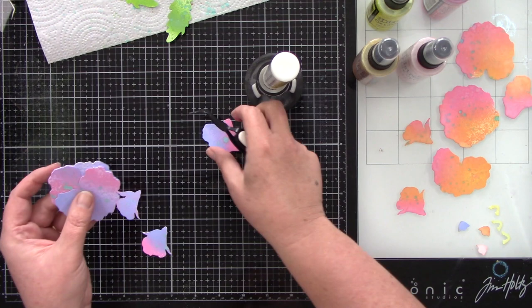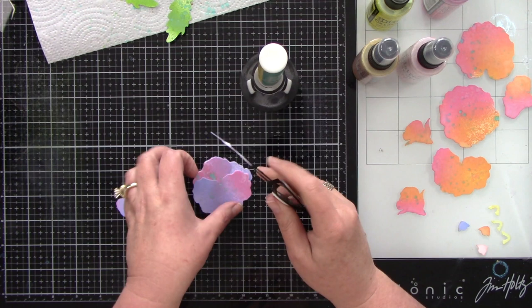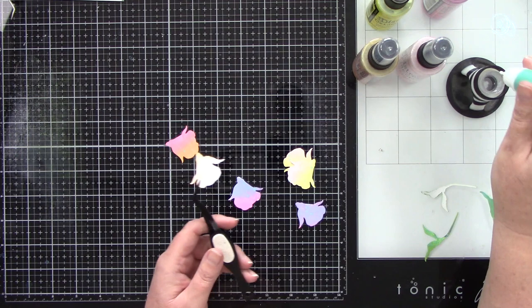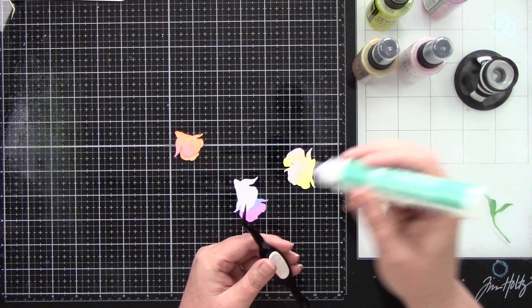I'm just using liquid glue right in the center because I want to be able to pop up the petals a little bit and give them a little bit of a fuller look so they're not laying flat. So I'm only adding glue to the center pieces of the flowers. But look at how easy that is coming together.